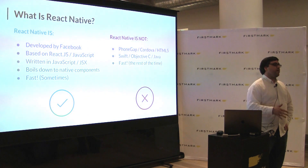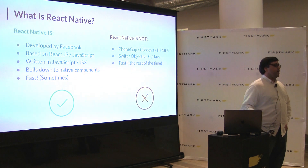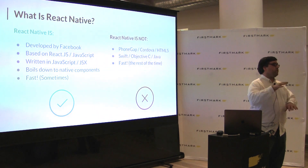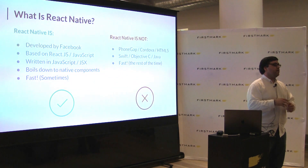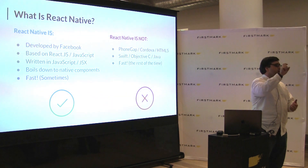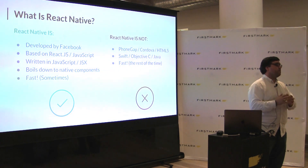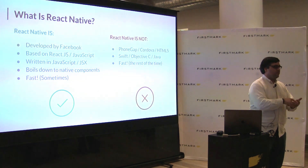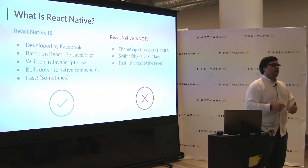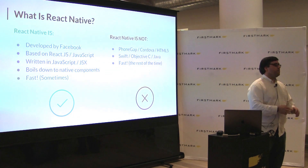That code gets transpiled down to ES5, bundled into a little JavaScript bundle inside your app. But the actual components in your app are native components. So when I have a scroll view or a list view, that's a native component. When I have a button, that's a native component. It feels and looks like a native component — it's just kind of being puppeted by the JavaScript.